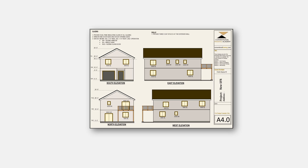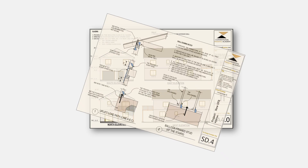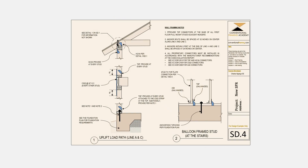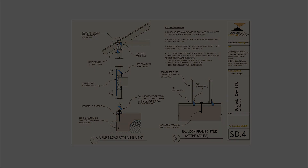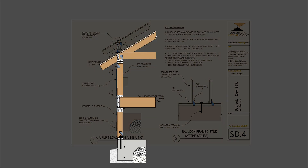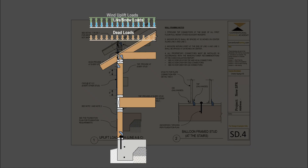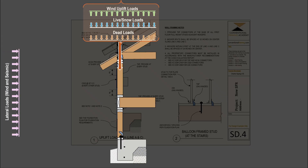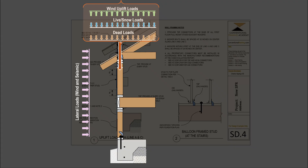The structural design process begins after the architectural design is completed, which means that the structural designer works within the architectural concept. Wall framing elements and foundations support the roof framing elements and upper floors. All roof loads — including dead loads, live loads or snow loads, and wind uplift loads — will be transferred to the bearing walls supporting the roof framing. Additionally, lateral loads including wind loads and seismic loads are also supported by the wall framing.